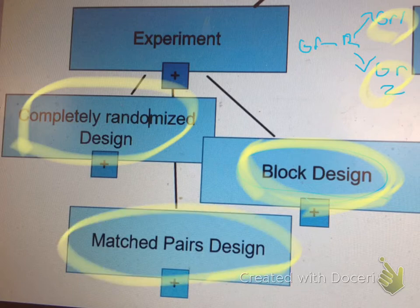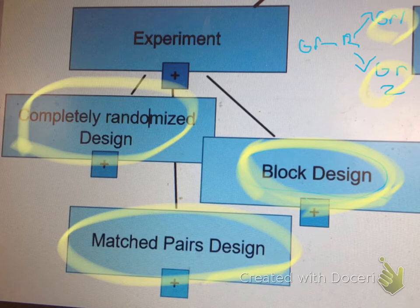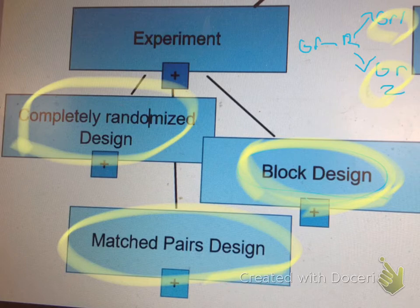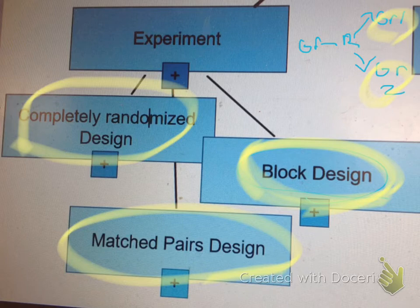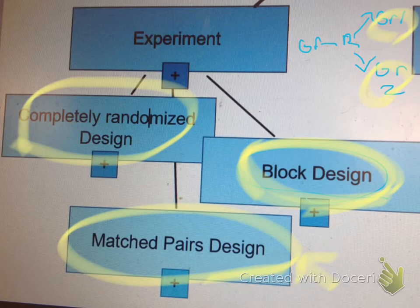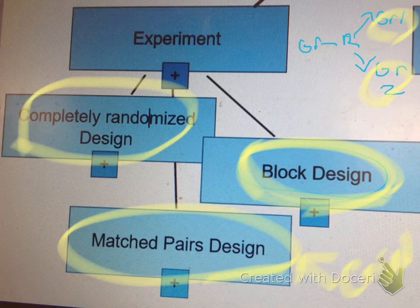Then we have our matched pairs design. That was the example. And again, please watch the video about the boots. The key with the matched pairs design is people get both treatments. These are the three different options for experiment. What you may run into, the types of design. Don't focus too much on that SRS piece there. It's just the hat method to get to the different groups. In matched pairs, we can just flip a coin to say, which treatment do I get first? Which treatment do I get second?